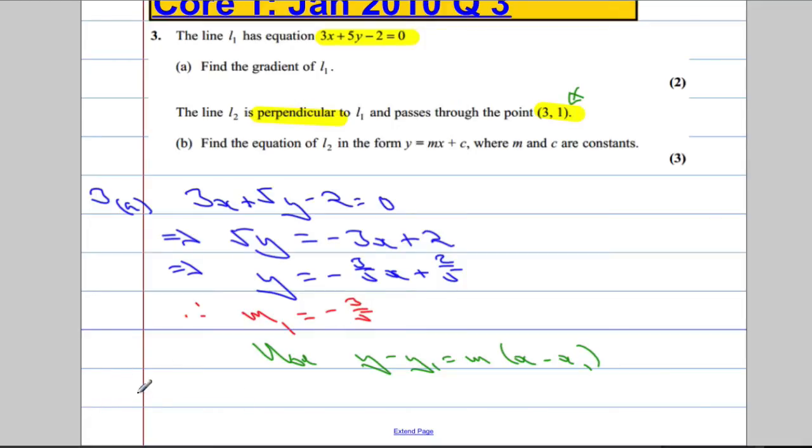So, part B. As L1 is perpendicular to L2, that means that when I multiply the gradients, m1 times m2, I'm going to get an answer of negative 1.